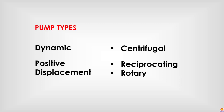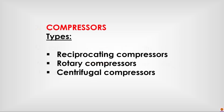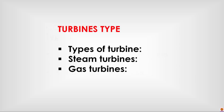Pump types include Dynamic Centrifugal Pumps and Positive Displacement types: Reciprocating and Rotary. Compressor types include Reciprocating Compressors, Rotary Compressors, and Centrifugal Compressors. Turbine types include Steam Turbines and Gas Turbines.